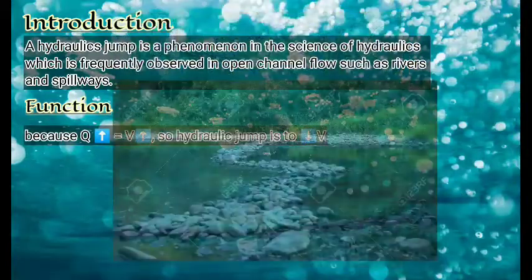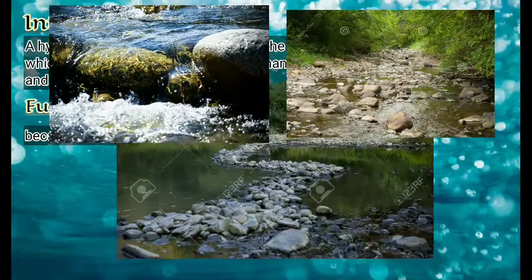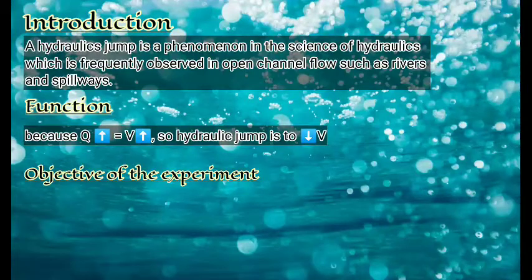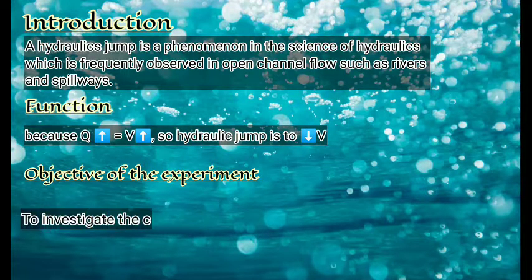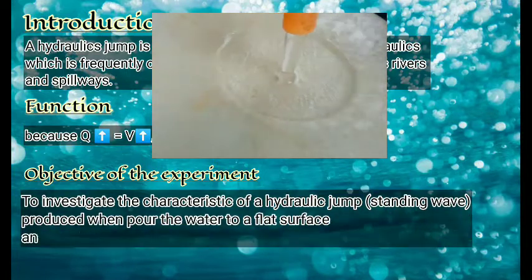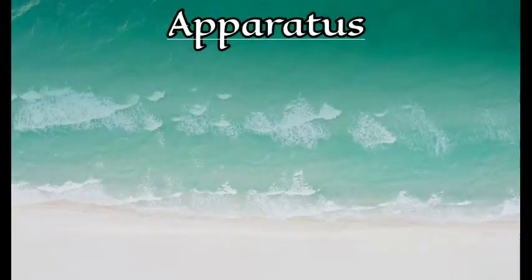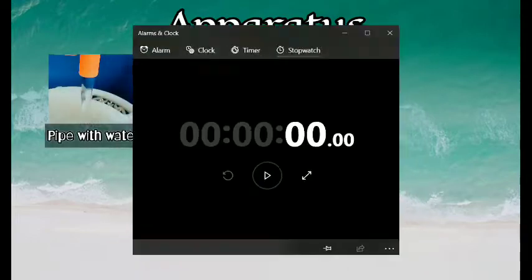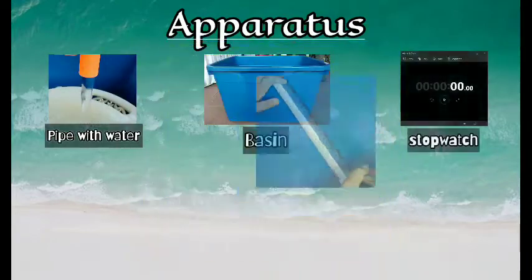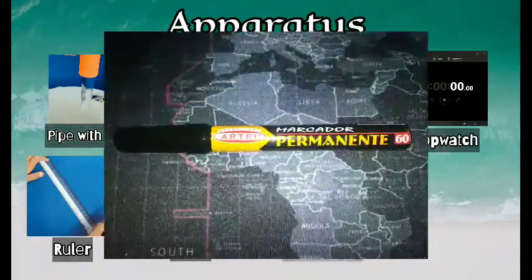The objective of placing stones at the river is to decrease the velocity of the water. The objective of this experiment is to investigate the characteristics of a hydraulic jump standing wave produced when pouring water onto a flat surface, and to observe the flow pattern obtained. The apparatus used in this experiment are a pipe with water, a basin, a stopwatch, a ruler, a stand, a flat surface, and a permanent pen.